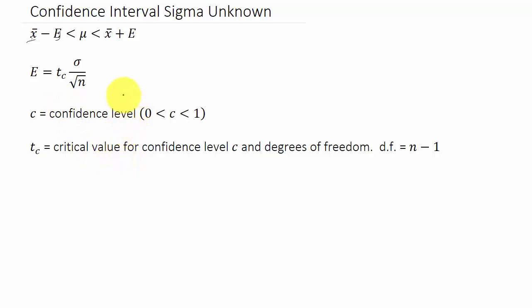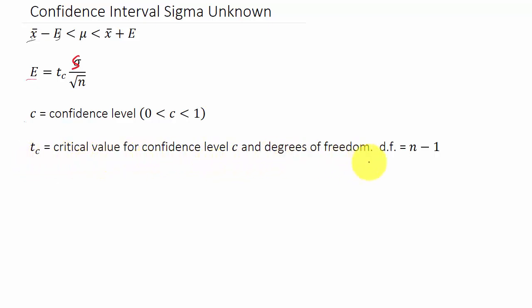Actually, that Sigma in the formula should be an S — that was a typo. So E equals T-sub-C times S over the square root of N, where C is your confidence level, T-sub-C is the critical value for confidence level C, and your degrees of freedom is N minus 1.